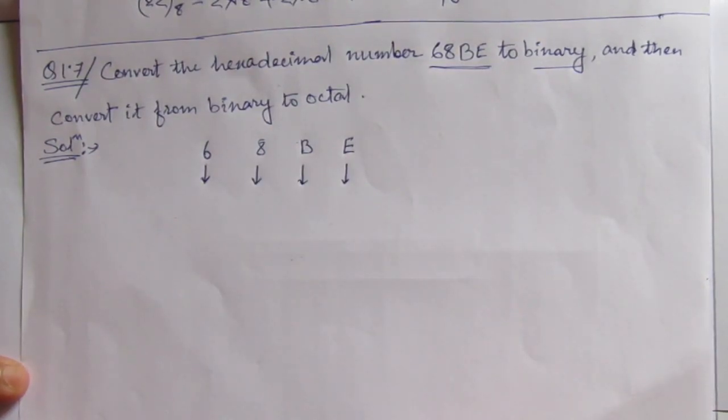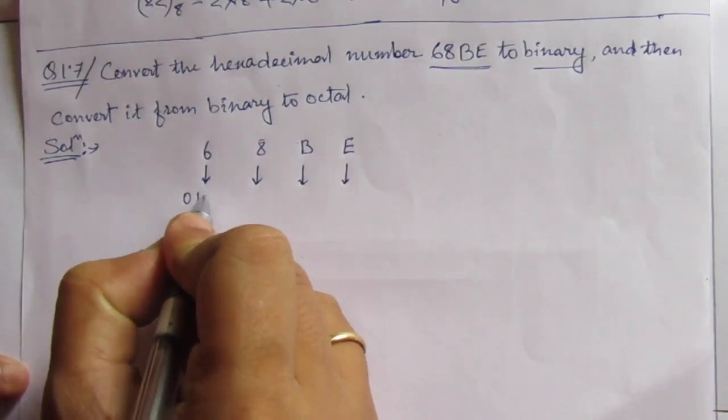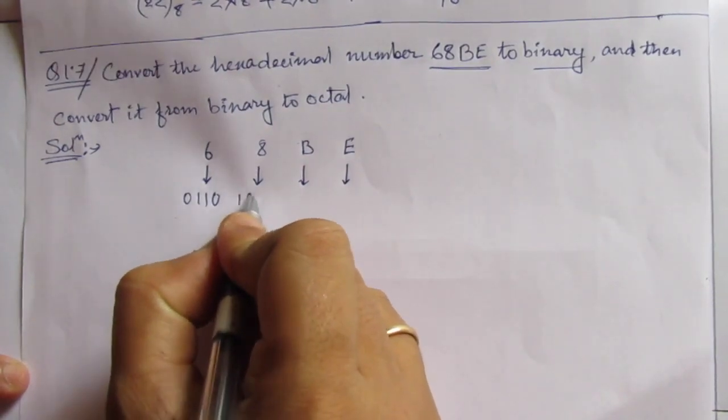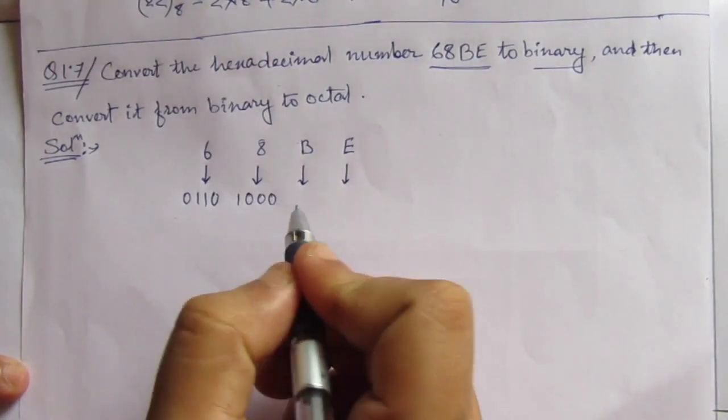6 is represented as 0110. Then 8 is represented as 1000.